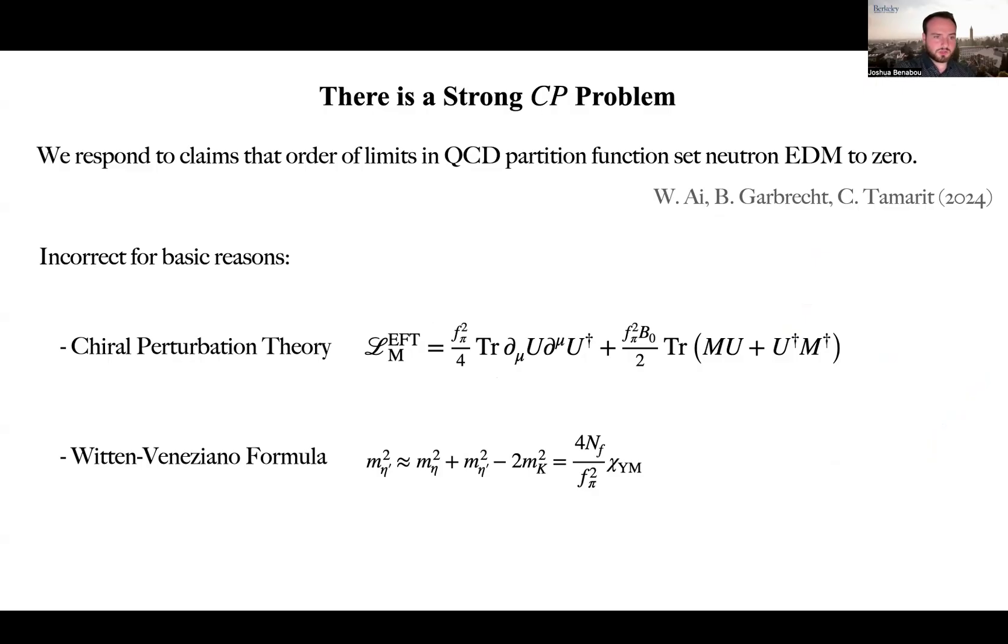for example, arguments in chiral perturbation theory and based on the so-called Witten-Veneziana relation between the mass of the eta prime meson and the topological susceptibility of pure Yang-Mills.